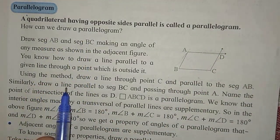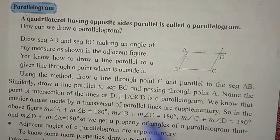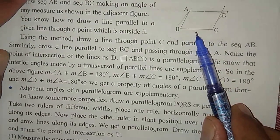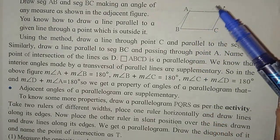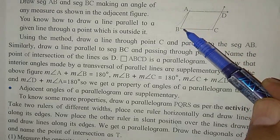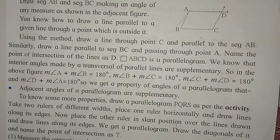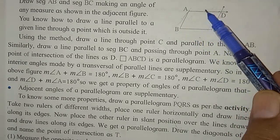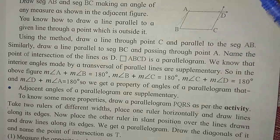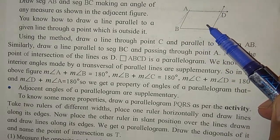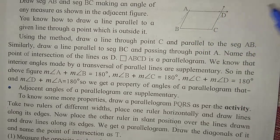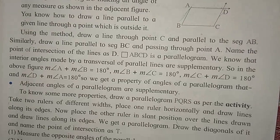Now, how can we draw the parallelogram? From this construction, we have to learn the properties of the parallelogram. We have to measure the opposite angles — you will find that the measure of angles B and D are equal. If you measure the opposite sides, you will find them congruent. And if you observe and measure the diagonals, you will find that they bisect each other — not necessarily perpendicular, but they bisect each other.